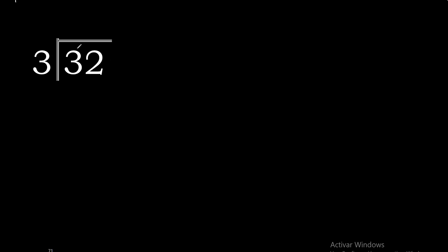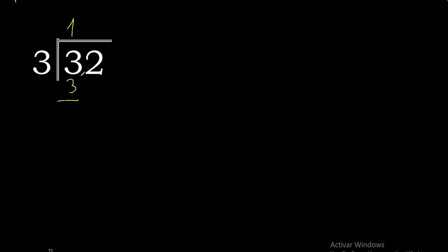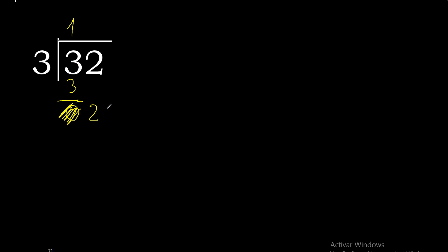32 divided by 3: 3 is not less than 3, therefore with 3. 3 multiplied by 2 is 6 — excessive. 3 multiplied by 1 is 3; 3 is the closest. 3 minus 3 is 0. Bring down 2. 2 is less than 3, therefore complete — there is no number, so complete with 0. Therefore: 0 point...